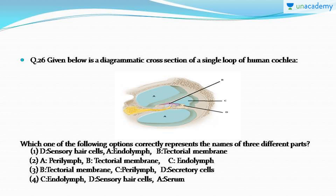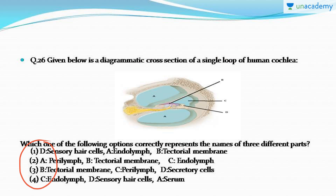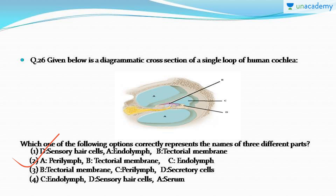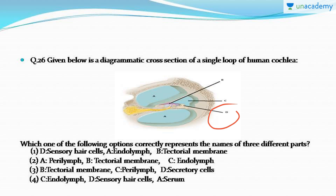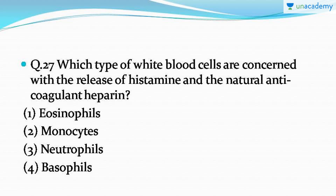Here is question number 26, which is in continuation with the previous tutorial. What you see is a cross-section of a single loop of the human cochlea. You have to tell which one of the four options correctly explains what A, B, C, or D are. The correct answer is option number two: A (the bluish liquid) is perilymph, B is the tectorial membrane, C (the smaller bluish part) is endolymph, and D is the organ of Corti.